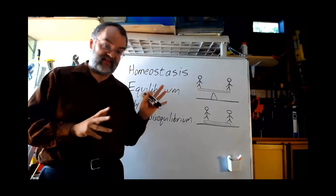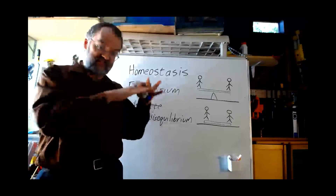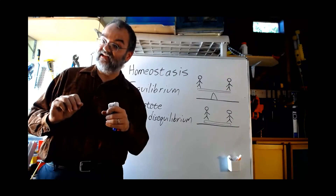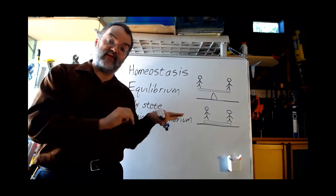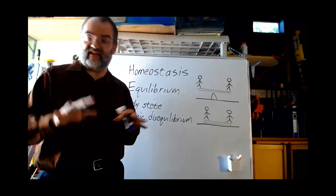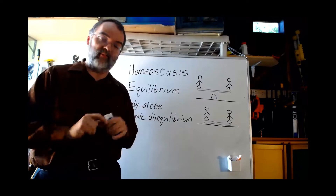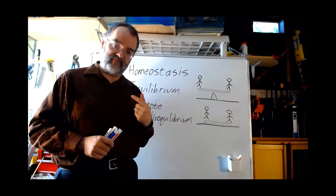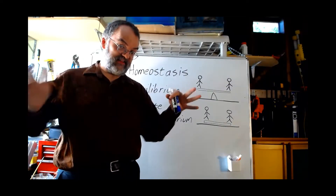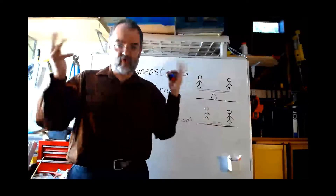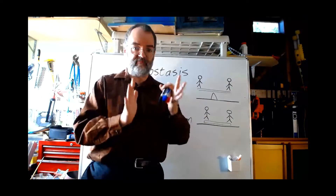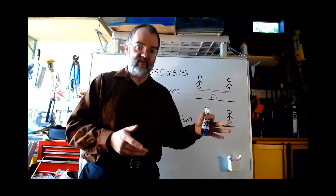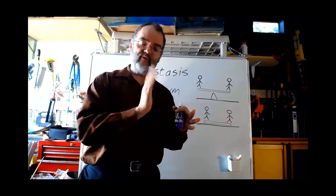Homeostasis is keeping things at a steady state. Equilibrium is also a steady state, but equilibrium is inherently stable. In general, the body is not — it's maintained in a disequilibrium state, which allows us to do things by making small changes. So the question then is: if I want to maintain this plank level — or if I want to stay vertical while standing on one foot — how do I do it? I can feel my muscles shifting around. How does my body know which way to shift them?